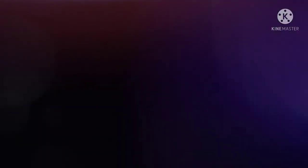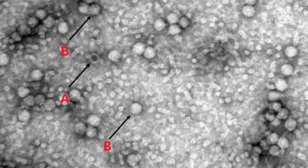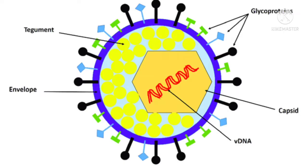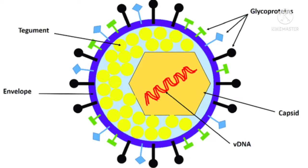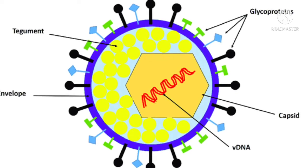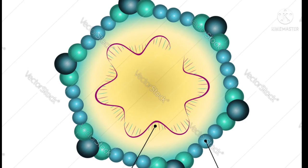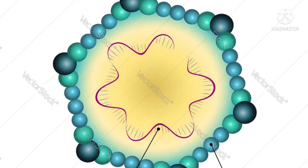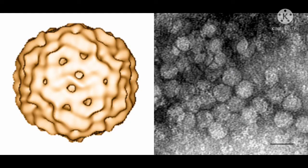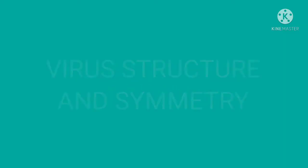Morphology of viruses: viruses are much smaller than other organisms. The extracellular infectious virus particle is called the virion. The size of viruses ranges from 20 to 300 nanometers in diameter. The largest virus is smallpox virus at around 300 nanometers, the smallest is parvovirus at 20 nanometers, and circovirus has the smallest genome.